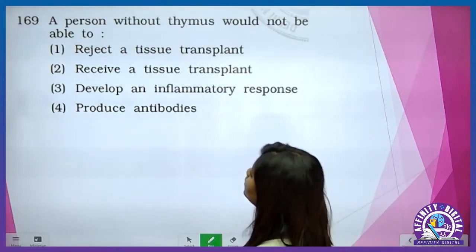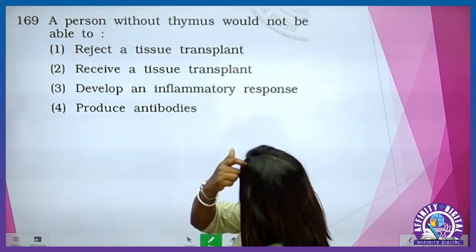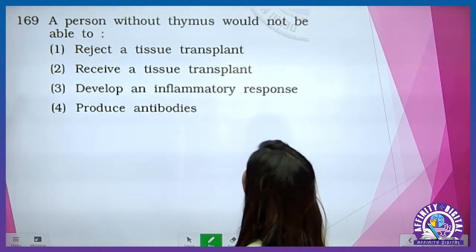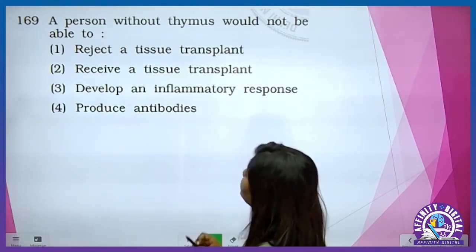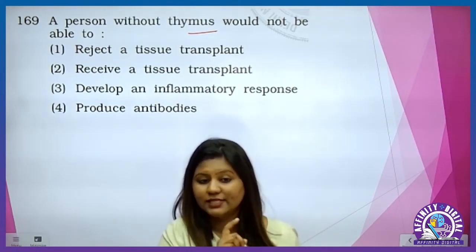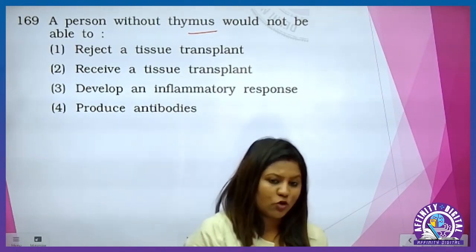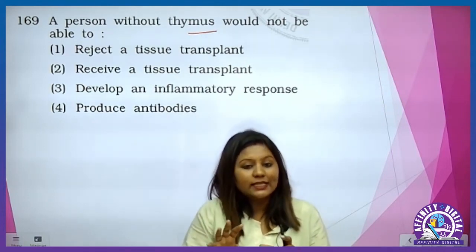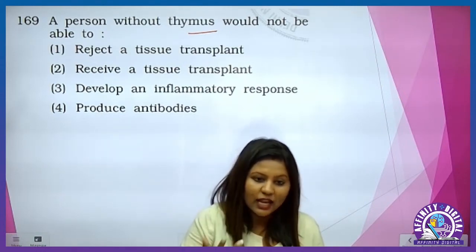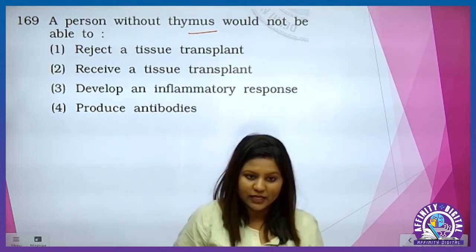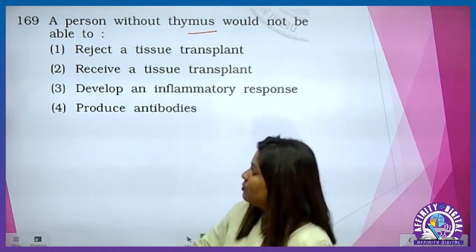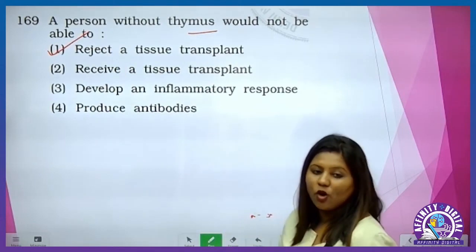A person without thymus would not be able to reject tissue transplant. Thymus mein T lymphocyte develop hota hai. T lymphocyte ka jo TC cell hai — that is killer T cell or cytotoxic T cell — that cell is responsible for the rejection. Agar thymus kisi ka nikal liya jayega, uska T helper cell develop nahi karega. Aur uske body mein organ transplant karenge, to organ rejection ka chance nil ho jayega. So it is option one.